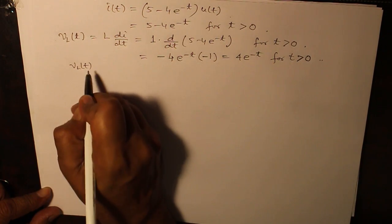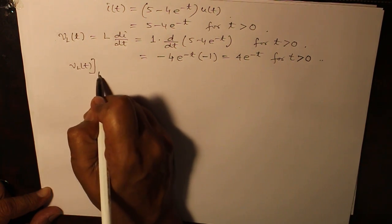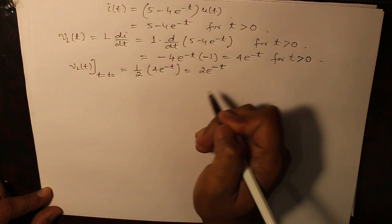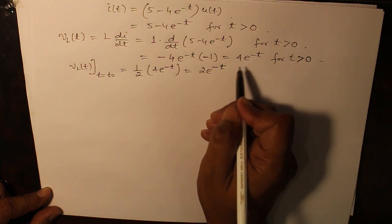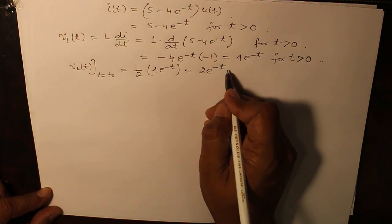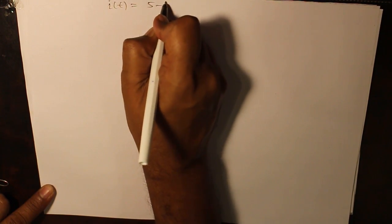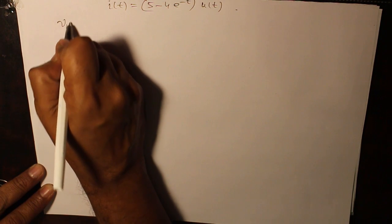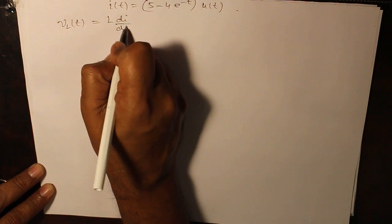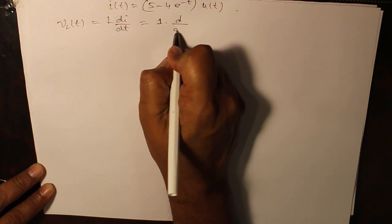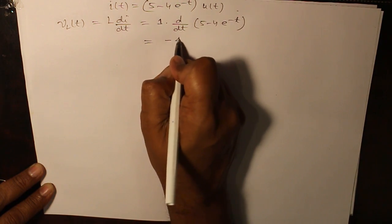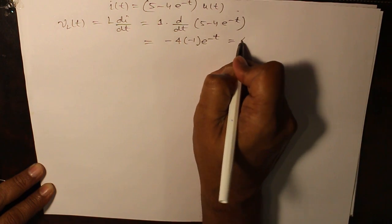Now VL t becomes half means 2 e raised to the power minus t. We want to find out VL t which is equal to L di by dt which equals differentiation of this term minus 4 e raised to power minus t, that is 4 e raised to power minus t.